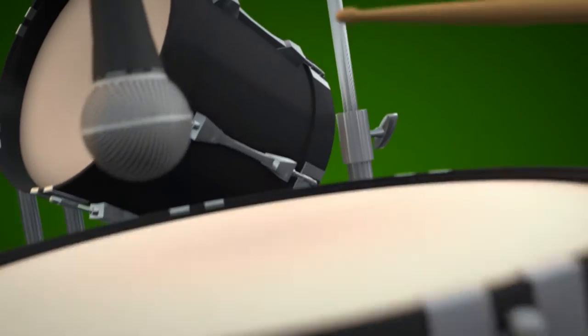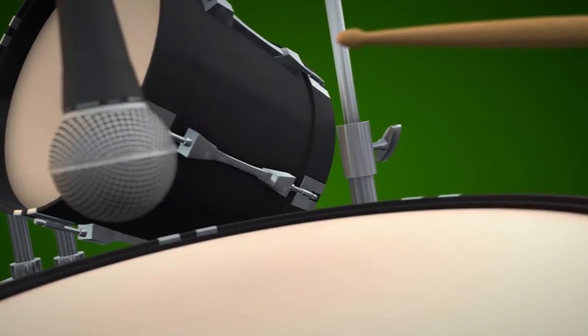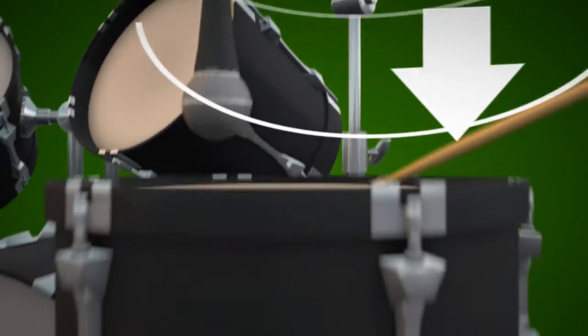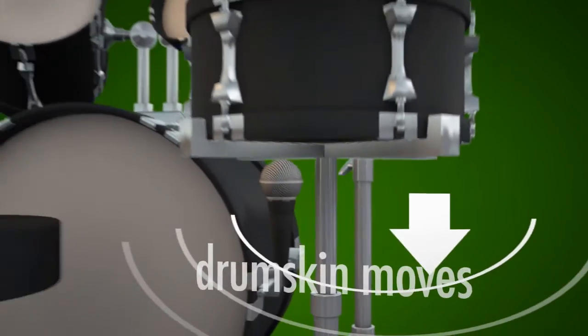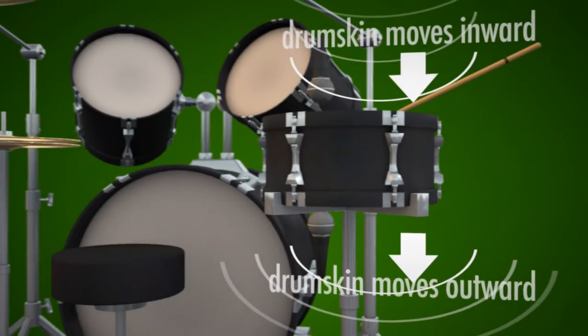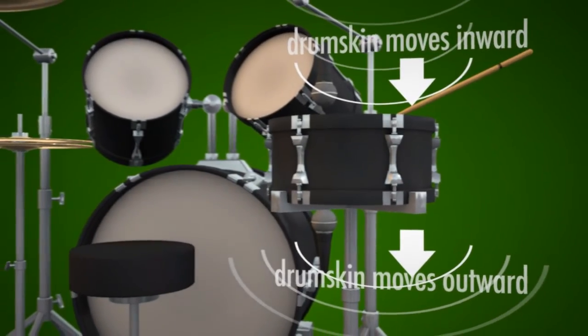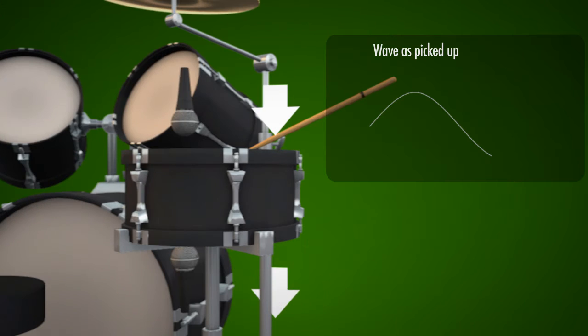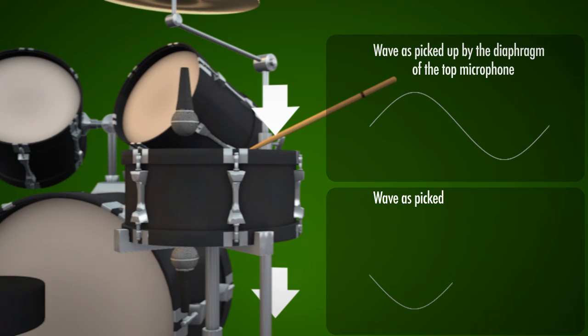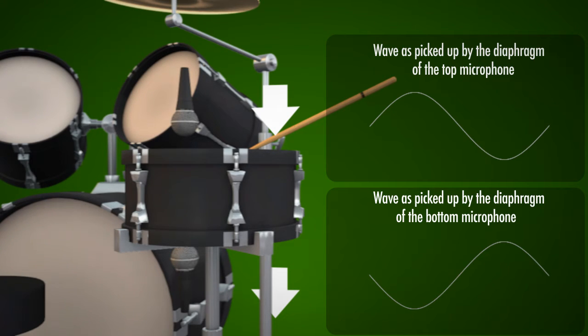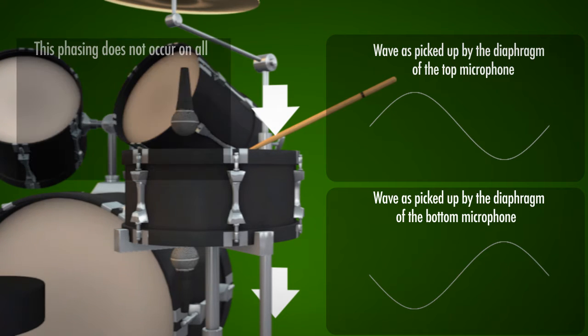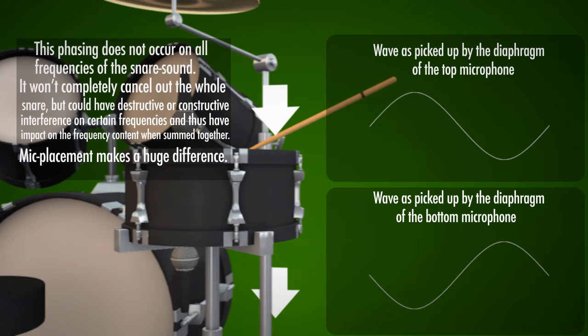When we talk about sound, we have compression and rarefaction — the movement going up and down looking at the waveform. As seen from the diaphragm of each microphone, this is exactly the opposite for the upper part of the snare drum compared to the lower part of the snare drum.